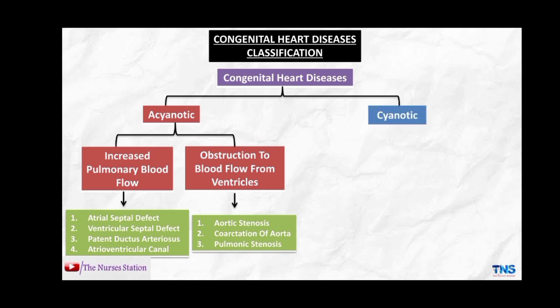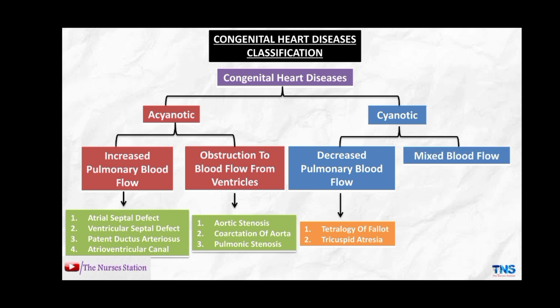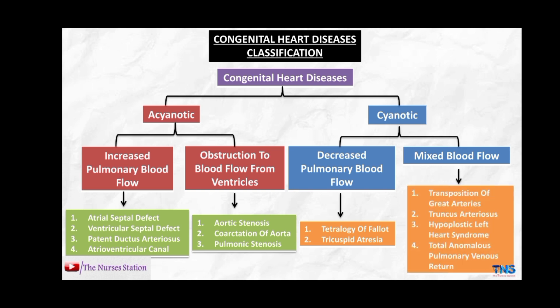The cyanotic group includes decreased pulmonary blood flow, which encompasses tetralogy of Fallot and tricuspid atresia. The second cyanotic type is mixed blood flow, including transposition of the great arteries, truncus arteriosus, hypoplastic left heart syndrome, and total anomalous pulmonary venous return.